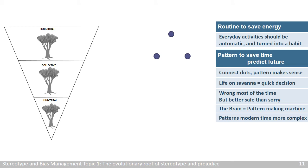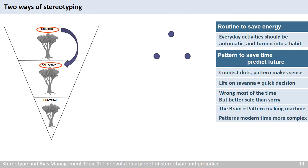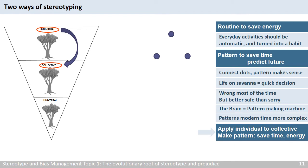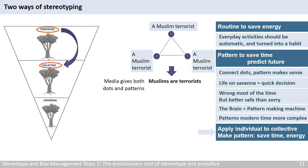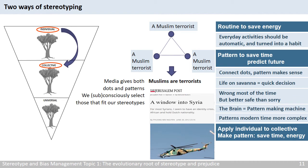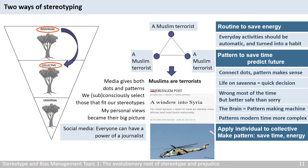Generally, we stereotype in two ways. First, we apply individual information to create a pattern, or an oversimplified idea about the collective, in order to save time and energy in giving judgment. For example, some Muslims are terrorists, and people may create a pattern of 'Muslims are terrorists.' Media often gives us both the patterns and the dots to make patterns, and we can always select those dots that fit our existing stereotypes. I speak from my own experience as a former journalist. During the Arab Spring, I wrote an article when I was in Syria — it was published in an Israeli newspaper. For many Israelis new to this conflict, my personal views became their big picture, or the pattern, of the war in that country. With social media, now everyone can have the power of a journalist but bears none of the responsibility — with fact checking and objectivity. This kind of media is increasingly giving us the wrong patterns.